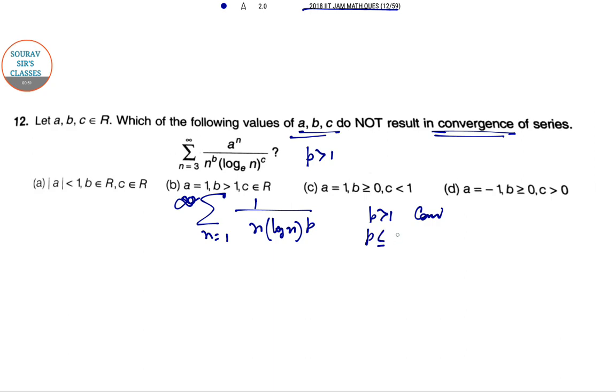P less than or equal to 1, 0 less than P less than 1, it's divergent. So hence in option C, a = 1, b > 0, c < 1 cannot result in the convergence of the series. So this is our answer.